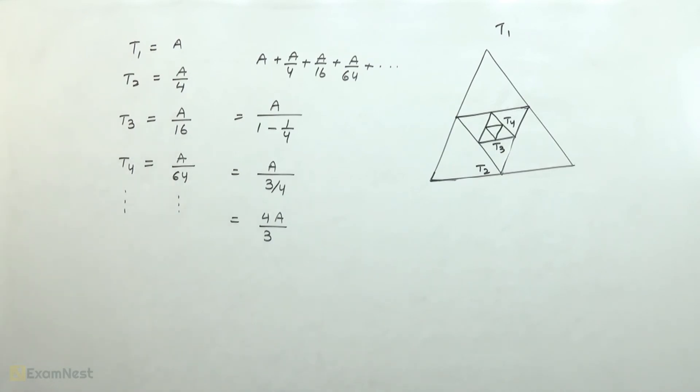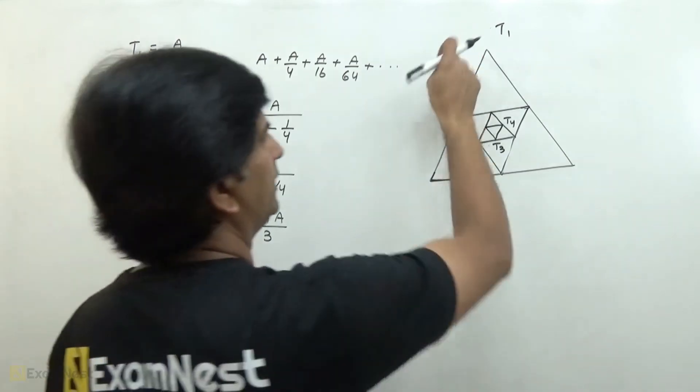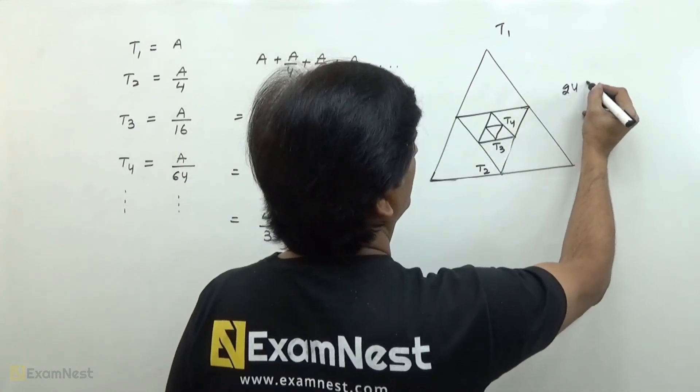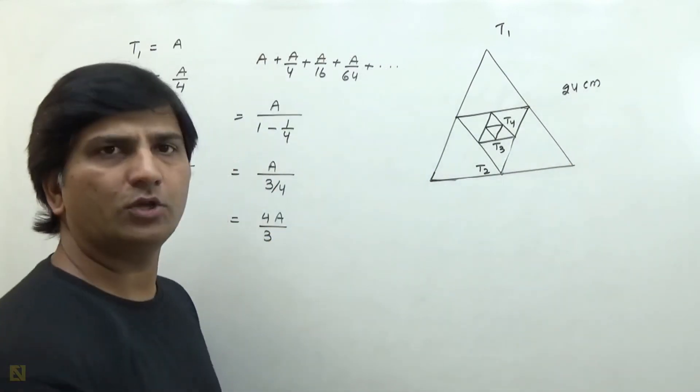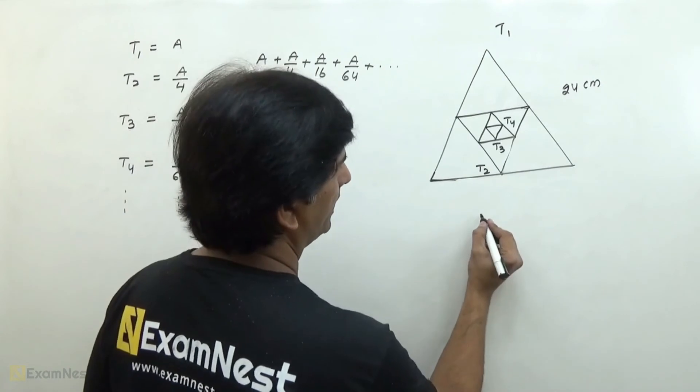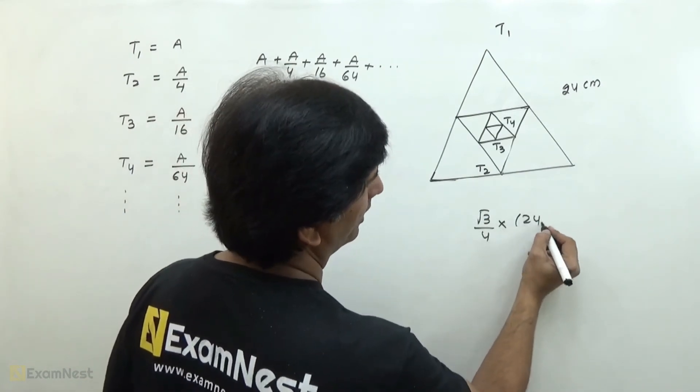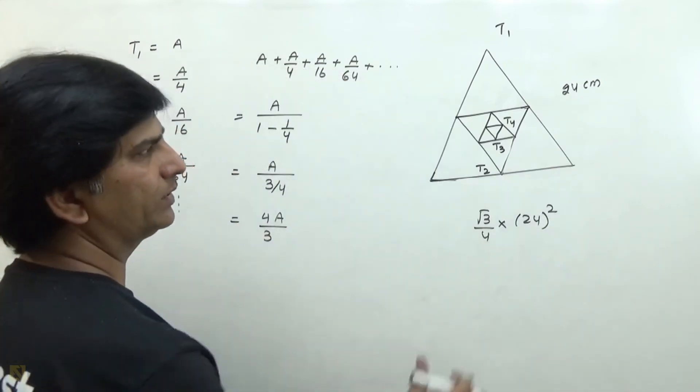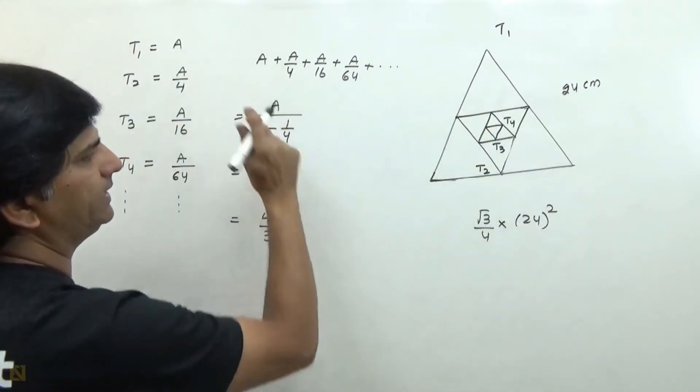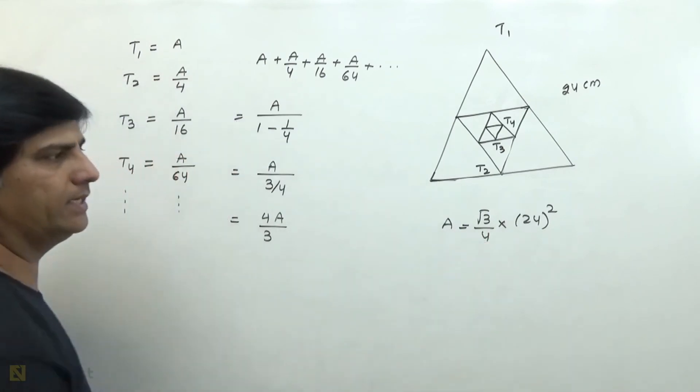Now for triangle T1, we can find its area because the side is given as 24 cm. The area of an equilateral triangle is root 3 by 4 times side squared, that is 24 squared. This is T1's area, which we represented as A, so the value of A is this.